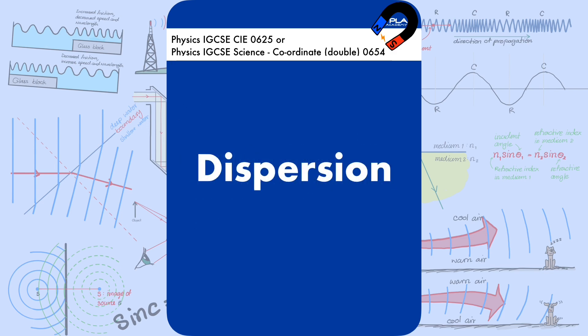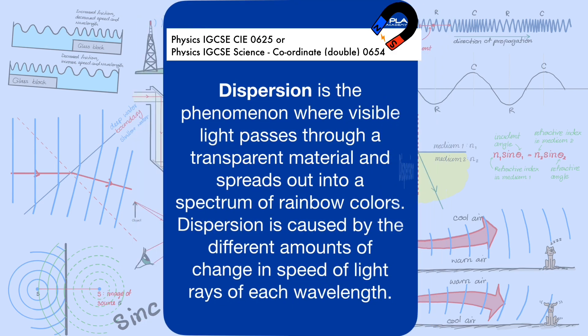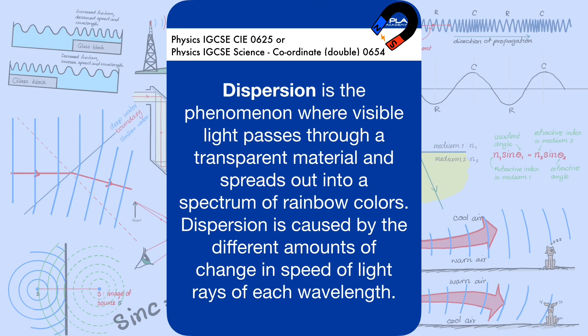Dispersion is the phenomenon where visible light passes through a transparent material and spreads out into a spectrum of rainbow colors. Dispersion is caused by the different amounts of change in speed of light rays of each wavelength.